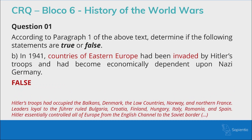Letter B: 'In 1941, countries of Eastern Europe — such as Bulgaria, Croatia, Hungary, and Romania — had been invaded by Hitler's troops and had become economically dependent upon Nazi Germany.' This is false. The text says Hitler's troops had occupied the Balkans, Denmark, Norway, and northern France. However, it then says leaders loyal to the Führer ruled Bulgaria, Croatia, Finland, Hungary, Italy, Romania, and Spain. They were economically dependent and loyal but were not invaded by Hitler.